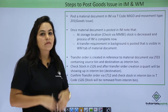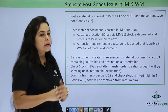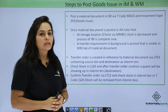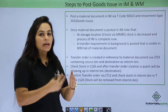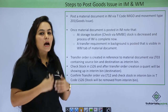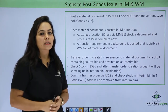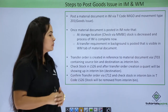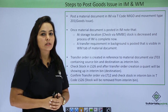A transfer requirement will be created in the background and will be visible in the WM tab of the material document. Once the transfer requirement is created, a transfer order will be created in reference to the material document via LT03. We can check stock in LS26 after transfer order creation — a quant will be generated and we can check it in the interim storage area. Then we will confirm the transfer order via LT12 and the stock will be removed from the interim storage area.